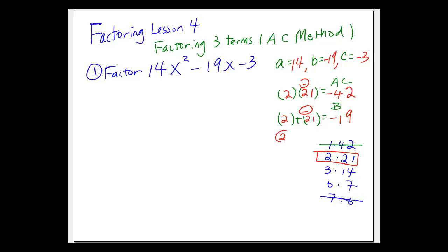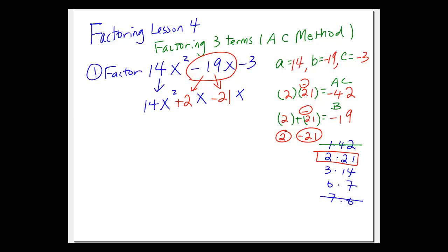With those two numbers, we go back to our original question and break the middle term BX into two terms using plus 2 and minus 21. Because the 19 came with X, we give them X: negative 21x plus 2x equals negative 19x. We're not changing the values, just splitting that term into two. We bring down the first term, 14x squared, and the last term, minus 3. So we've changed a three-term question into a four-term question without changing any values.